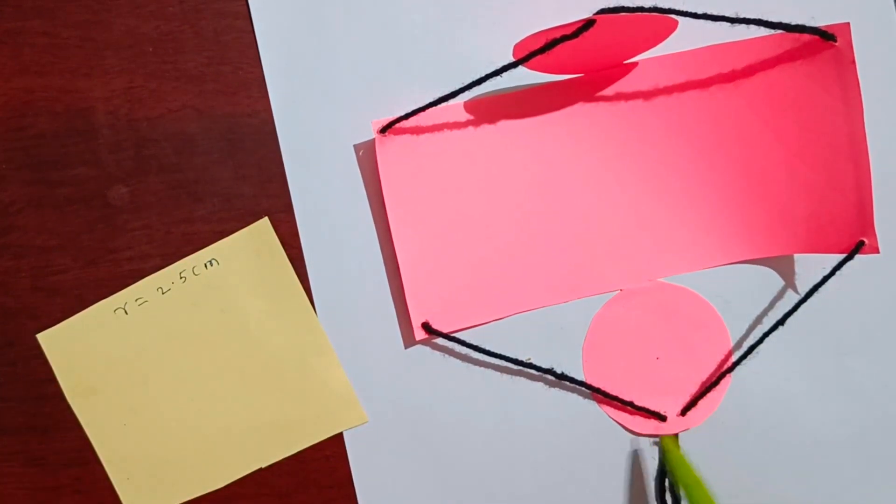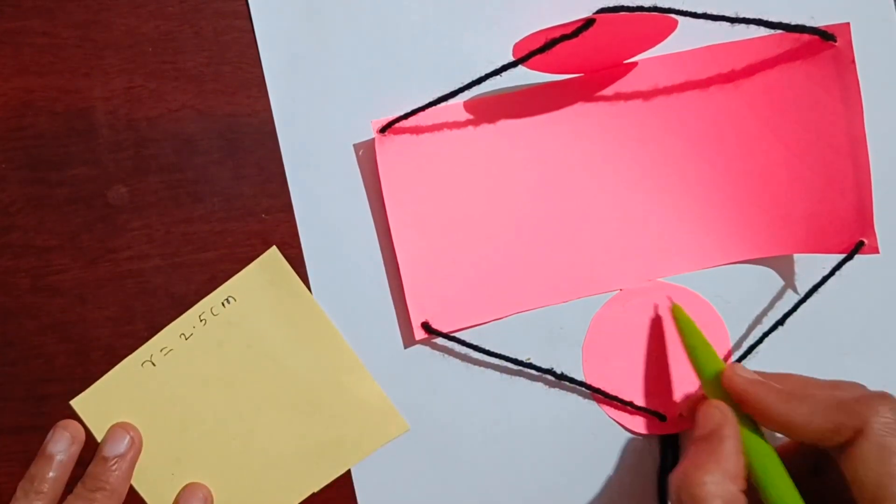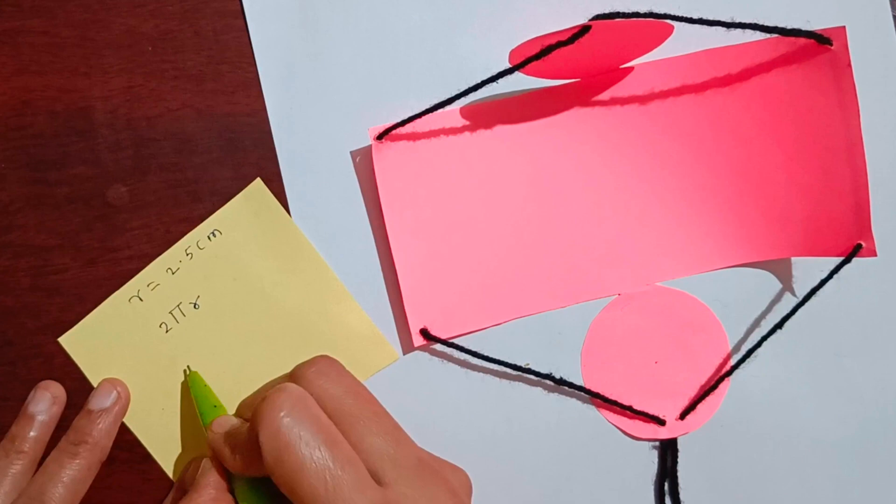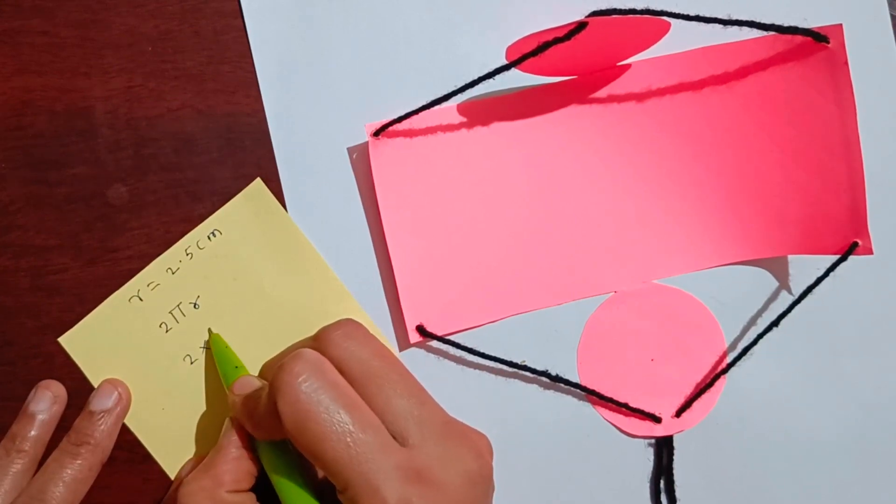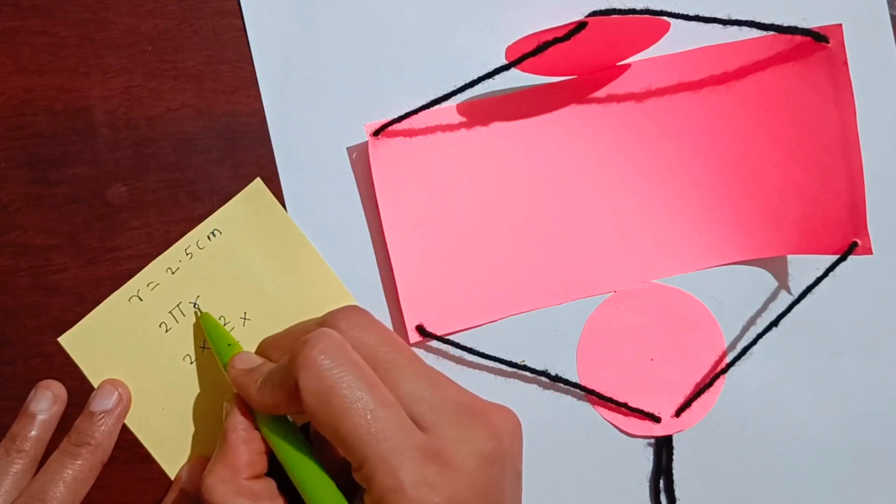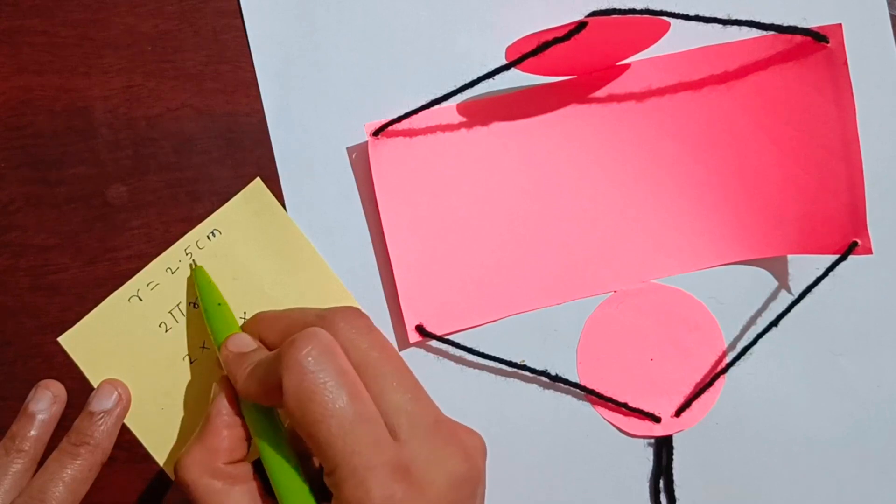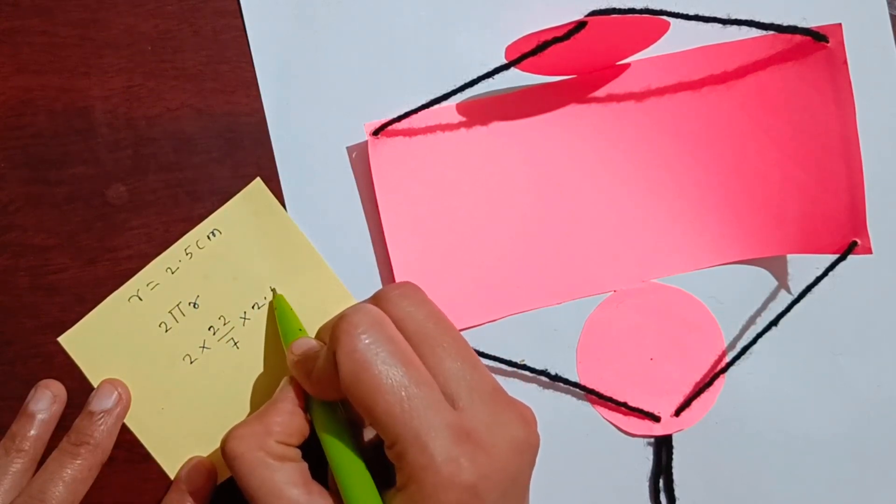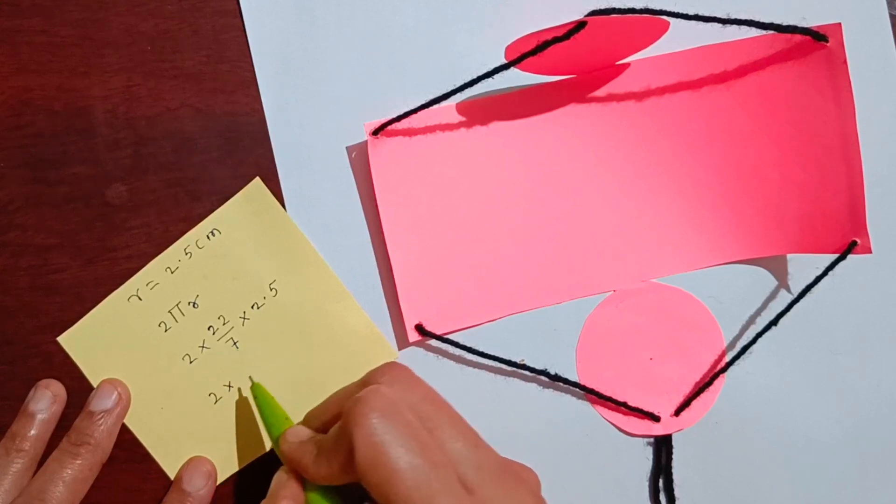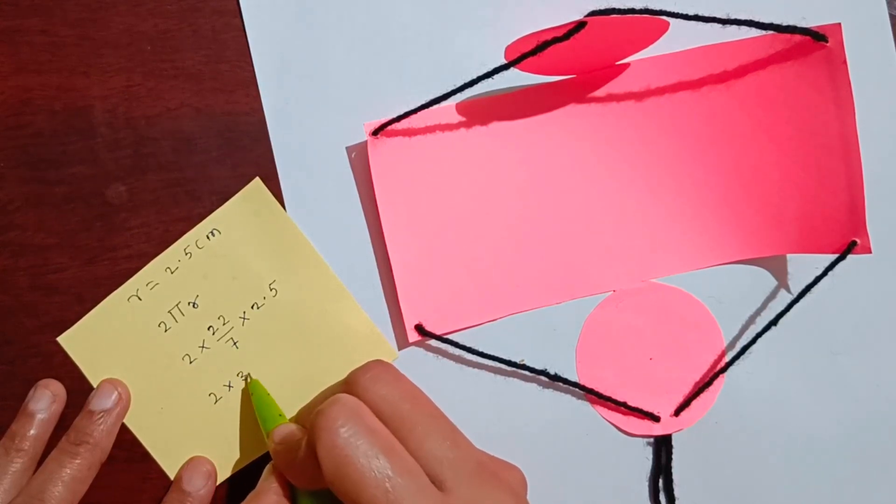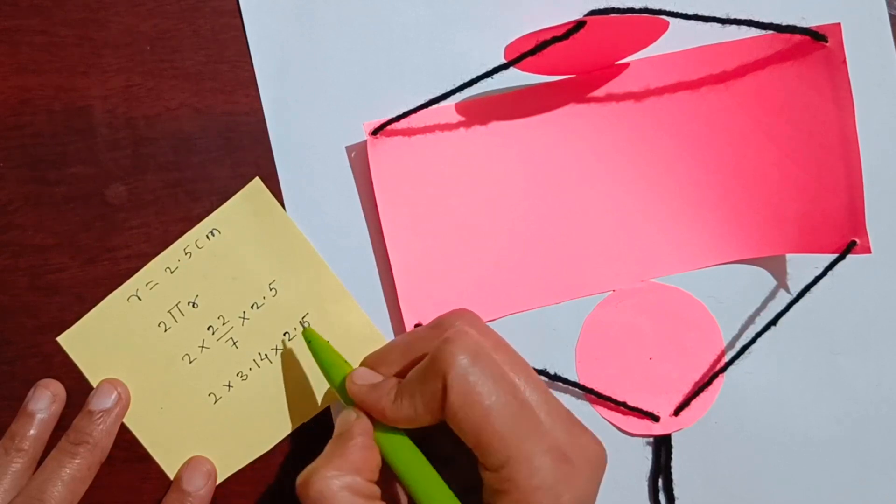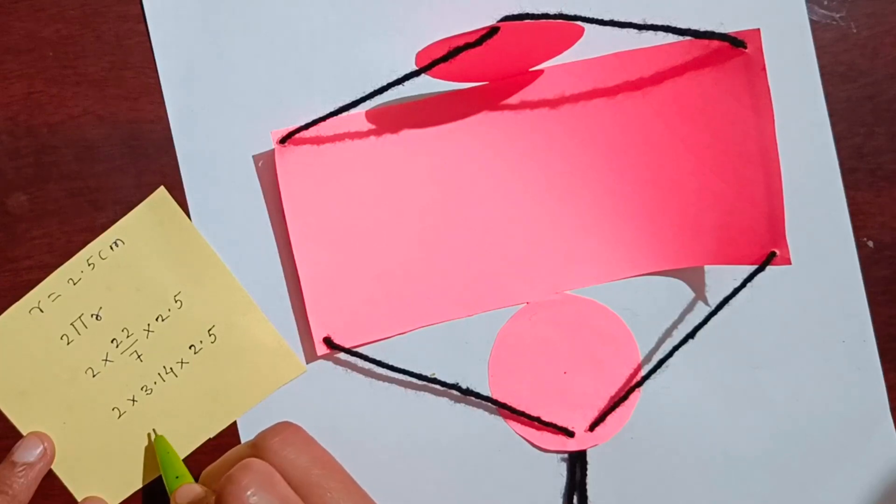So we will take the formula: circumference of a circle is 2πr. So 2 into π, π is equal to 22 upon 7, into r. How much is r? 2.5 cm. So 2 into 22 upon 7 means 3.14. So here it is 15.7 cm.